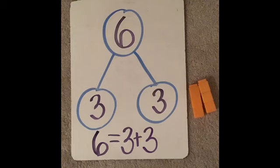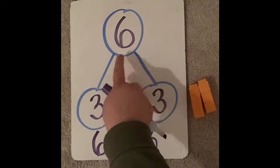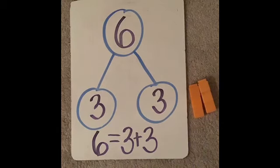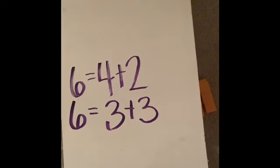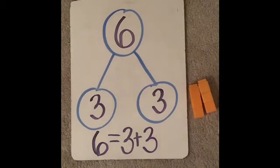Did you finish? This is absolutely correct — three and three are hidden partners in the number six. If you start with the number six and you take three away, you're always going to have three left. I'm going to add that to our list of hidden partners. So far we've found hidden partners of four and two, along with hidden partners of three and three — two different ways to make the number six.